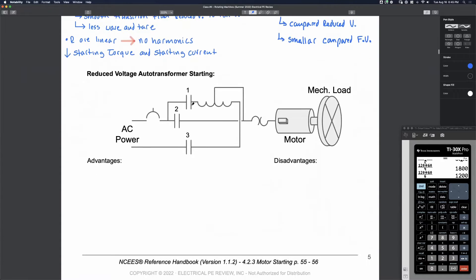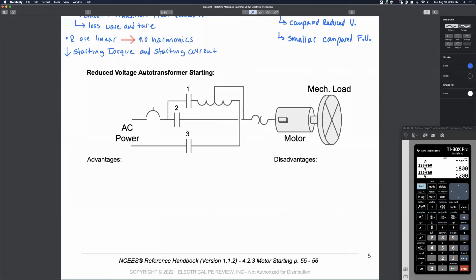Next reduced voltage starting method is auto transformer starting. Again, another reason why I like to cover transformers first. So everyone recognize this auto transformer connected to the motor.